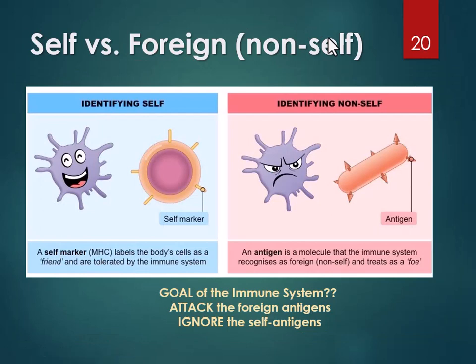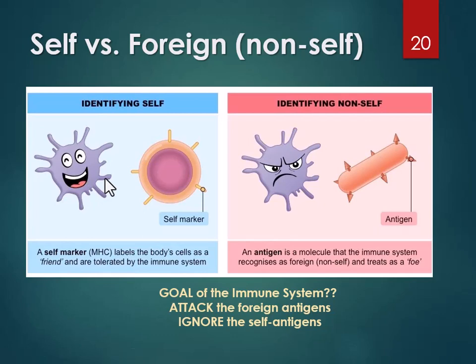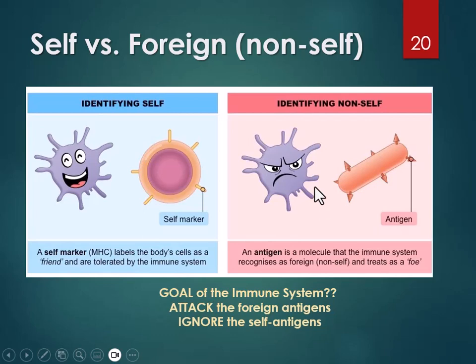Your immune system has to figure out which are the bad guys and which are the good guys. If it sees your cell and recognizes the antigens as self, great — it knows not to attack. Autoimmune diseases are when your immune system gets confused and starts to attack self. For example, in rheumatoid arthritis, your immune system is attacking your synovial fluid, which is hard to treat — we have to suppress the immune system, meaning you get sick from everything else. When immune cells see a pathogen with a foreign antigen, they recognize it as foreign, trigger the immune response, and all kinds of things happen.